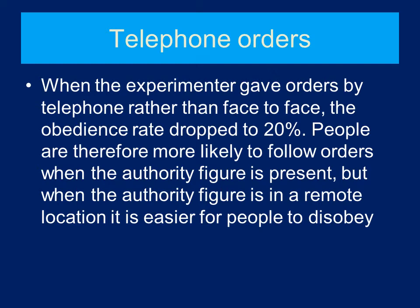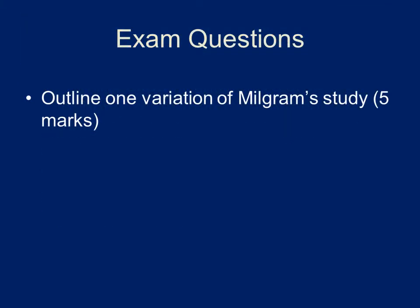The idea of proximity from social impact theory supports these findings: applying it to obedience, you're much more likely to obey when the experimenter is physically in front of you than when they're giving instructions over the phone. You could get a whole range of exam questions on Milgram's variations — discussing the three, comparing them, or comparing them with the original study. You might also be asked what factors affect obedience, or a simple question like 'outline one variation study' for five marks.